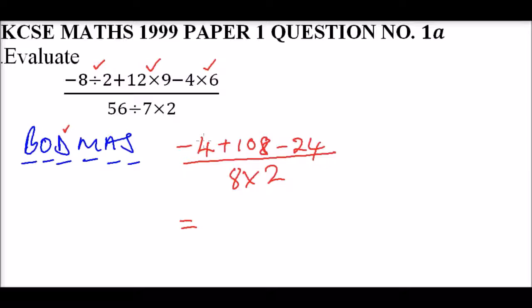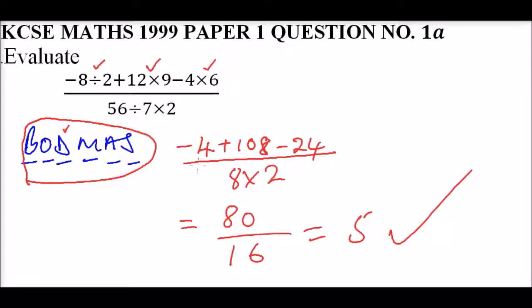That is 104. 104 minus 24 gives us 80, divided by 16. When you divide 80 by 16, you get 5. Remember, you must apply BODMAS to help you know which operation to start with according to your question. That's how you do that.